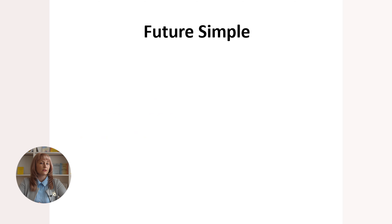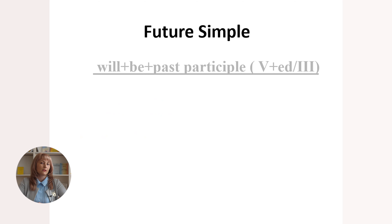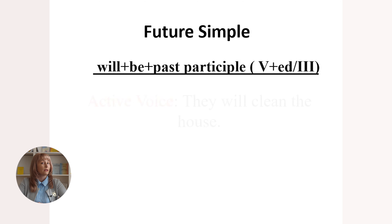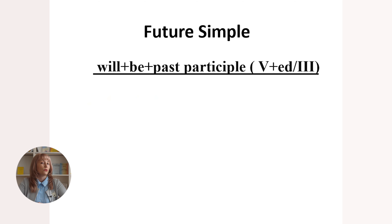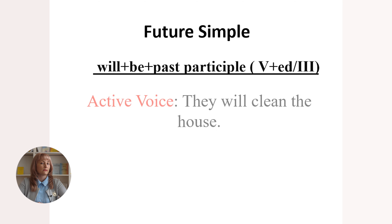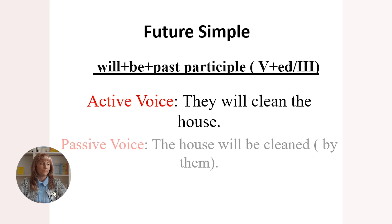Now let's see future simple in passive voice. It is formed with 'will' plus 'be' plus the past participle of the meaningful verb — the '-ed' ending or the third form of the irregular verb. Active voice: 'They will clean the house.' In passive voice: 'The house will be cleaned by them.'